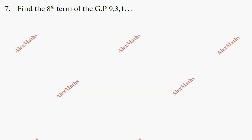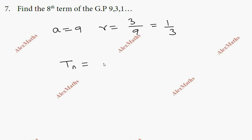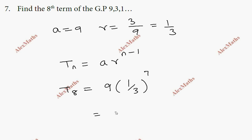Question number seven: find the 8th term of the GP. The first term a and common ratio r = 1/3 (second term divided by first term). Using the formula t_n = a × r^(n−1), the 8th term = a × (1/3)^7. With a = 3^2 = 9, we get 9 × (1/3)^7 = 3^2 / 3^7 = 1/3^5 = 1/243.